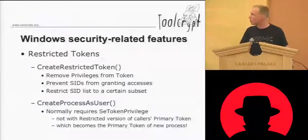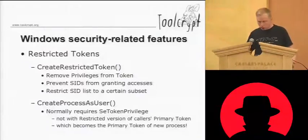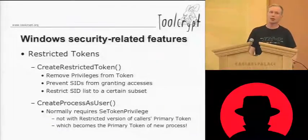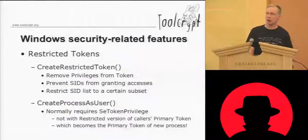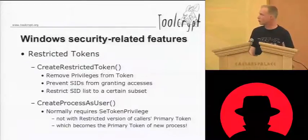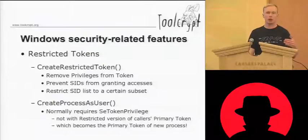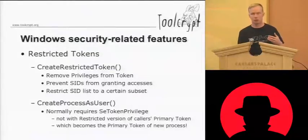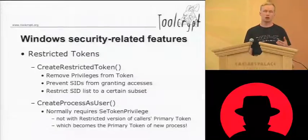You can do a number of different things with the CreateRestrictedToken call, where you can prevent SIDs from granting access. You're basically making certain SIDs in the list restricted, which means they can only be used to deny access. When walking the access control entries in the DACL for the resource you've requested access to, it will skip all the granting access control entries and only process the deny access control entries.